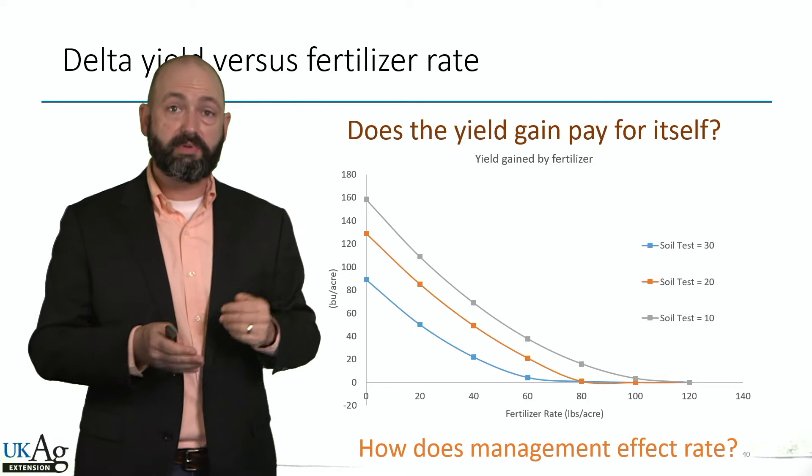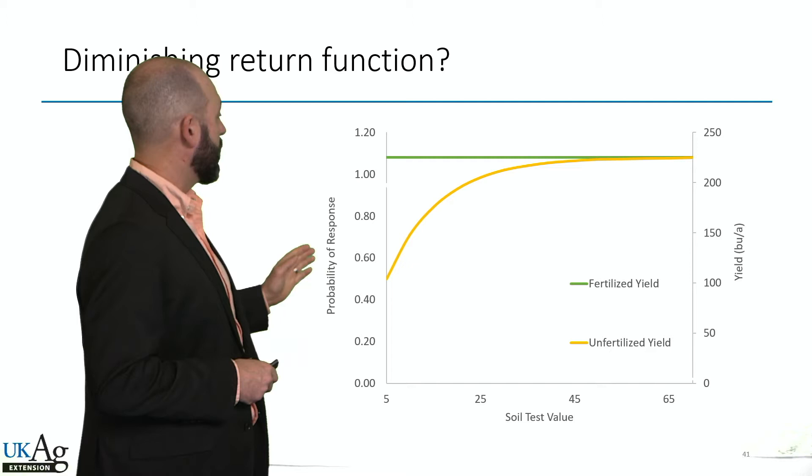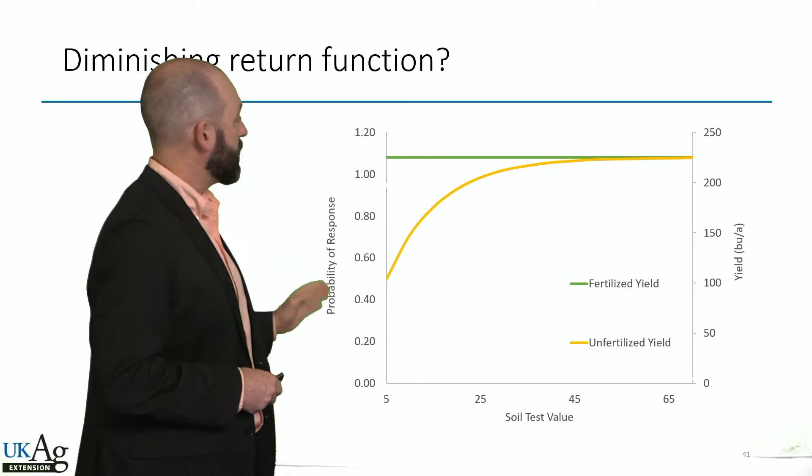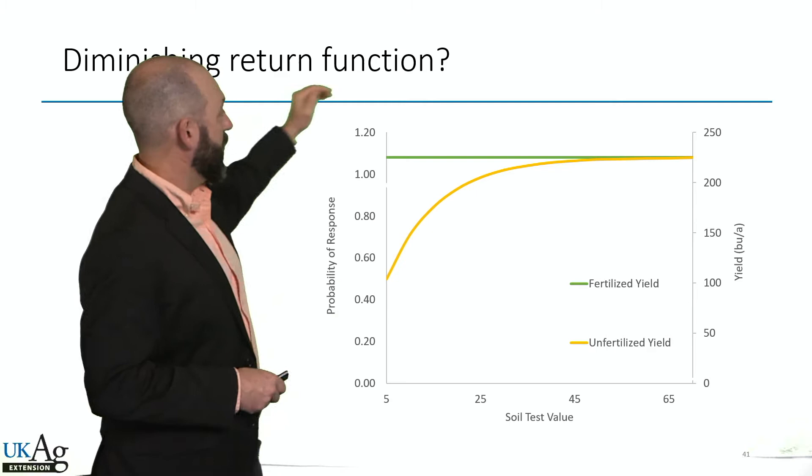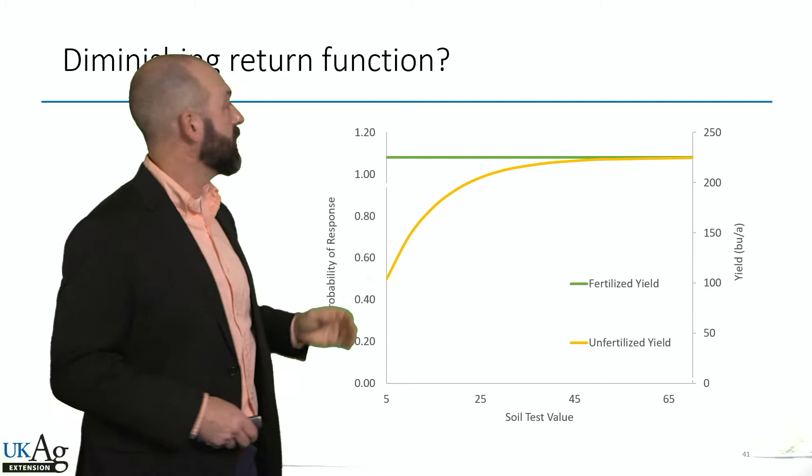This is another way to look at that same kind of diminishing return function. That yellow line is the unfertilized yield, and we can see that yield goes up as you add fertilizer or as your soil test goes up, and then the fertilized values are consistent across the soil test. So you can maximize your yield either based off fertilizer or based off soil supply at the far end of that function.